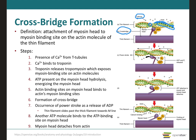The myosin head also includes an ATP binding site and an ATPase, which is an enzyme that breaks down ATP into adenosine diphosphate (ADP) and a phosphate group. This reaction both reorients and energizes the myosin head, giving it the energy to attach to the actin molecule. The energized myosin head attaches to the myosin binding site on the actin, releasing the phosphate group in the process. When the myosin heads attach to the actin during contraction, this is referred to as the cross-bridge.